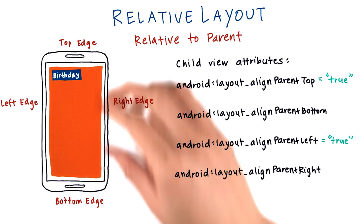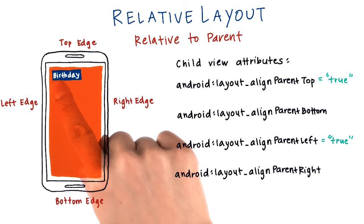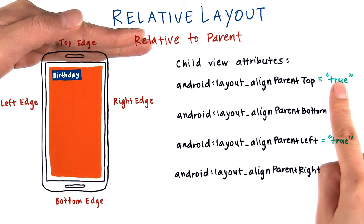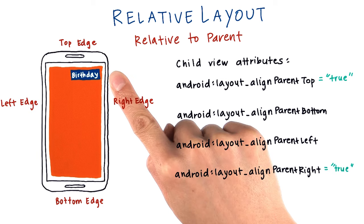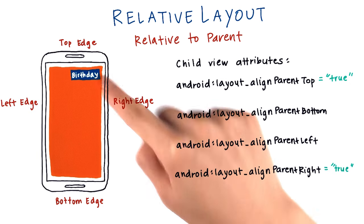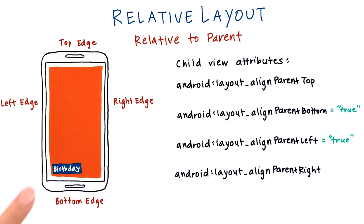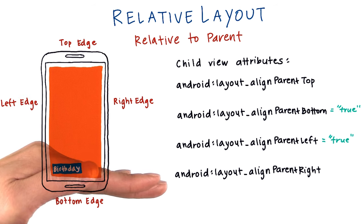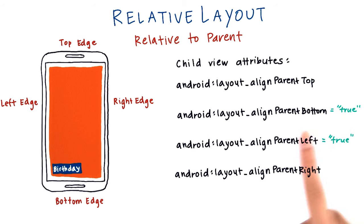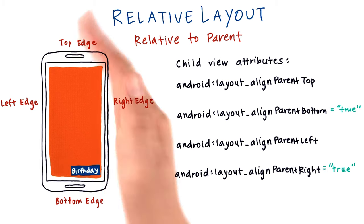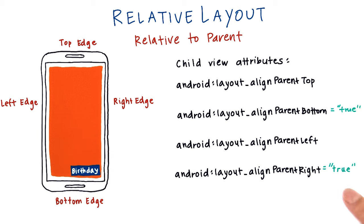In addition to positioning a child at the top or bottom portion of the screen, you can also do specific corners. To position the birthday text view in the top left corner, we say alignParentTop equals true and alignParentLeft equals true. For the top right corner, alignParentTop equals true and alignParentRight equals true. For the bottom left corner, alignParentBottom equals true and alignParentLeft equals true. These false values are false by default, so you don't need to include them in the XML code. For the bottom right corner, alignParentBottom and alignParentRight are equal to true; the other two can be left out of the code.